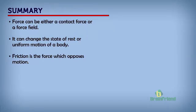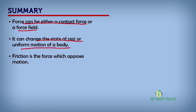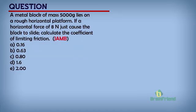What have we been looking at in this part two of motion? We have established that force can either be a contact force or a force field, and they can bring about motion. Contact force can be a push or a pull, and force field can be a magnetic field, gravitational field, or electric field. We have also said force can change the state of rest or uniform motion of a body, and that friction is the force which opposes the motion of an object.